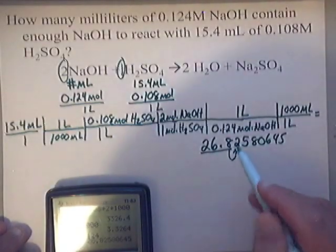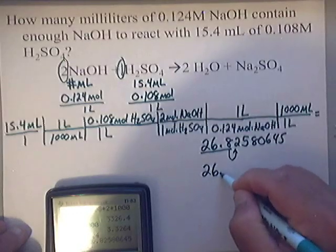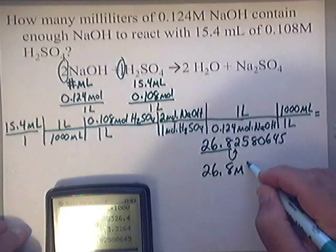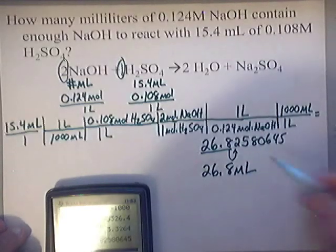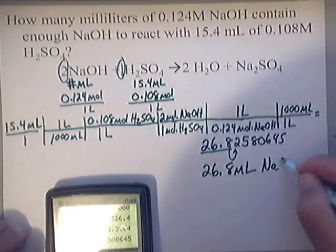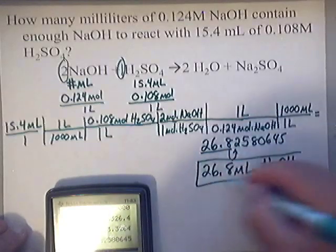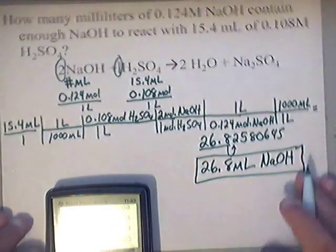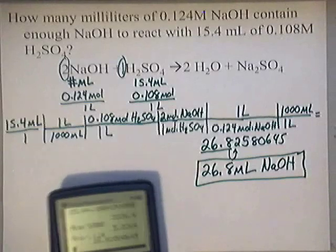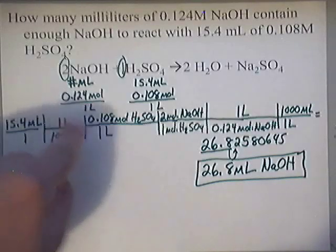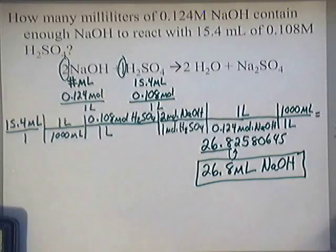So the answer is 26.8 milliliters of NaOH. Make sure you watch this video as many times as you need to get it down. It's just stoichiometry — match up your units diagonally and you will be fine. I hope this helps!